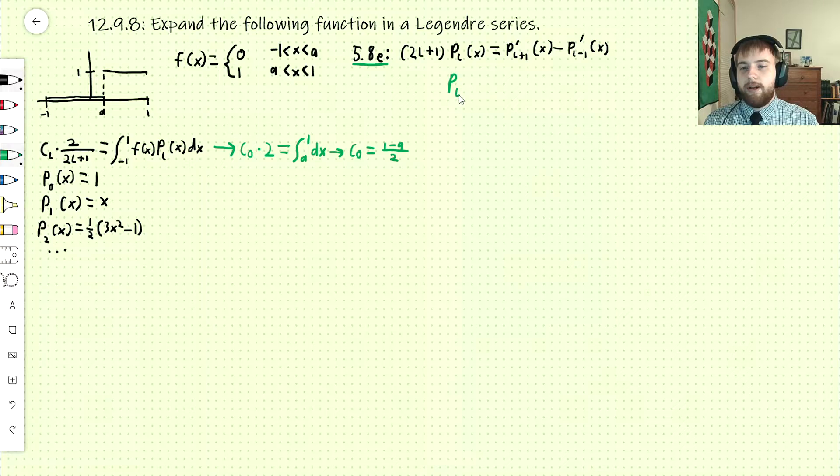So we're going to start out by writing this in terms of P_L on this side. So this is going to be 1/(2L+1). And then we're going to have the derivative of the next Legendre polynomial in the sequence minus the derivative of the previous Legendre polynomial in the sequence. And then from here, we're going to take the integral with respect to x. So when we do that, we can set our limits of integration to be whatever we want as long as they're the same on both sides.